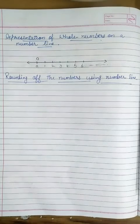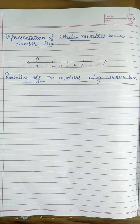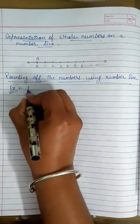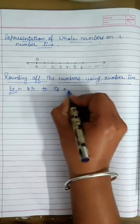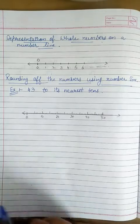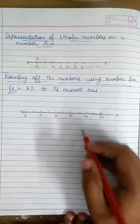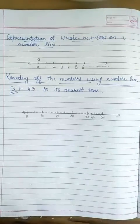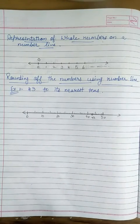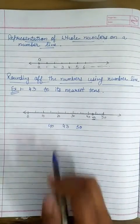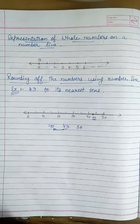Now we will discuss rounding of numbers using a number line. Let us take an example: estimate 43 to its nearest tens. First of all we draw a number line. 43 lies between 40 and 50 on the number line. We check whether 43 is nearer to 40 or 50. Clearly, 43 is nearer to 40, so the answer is 40.